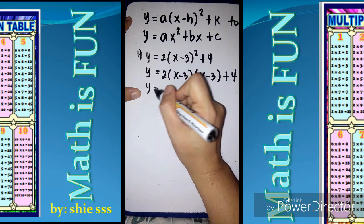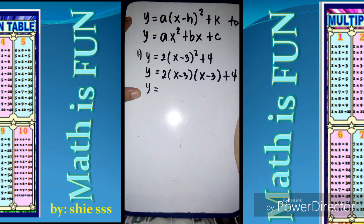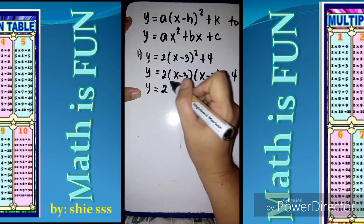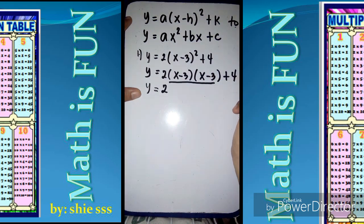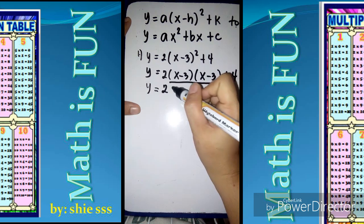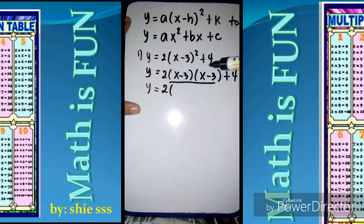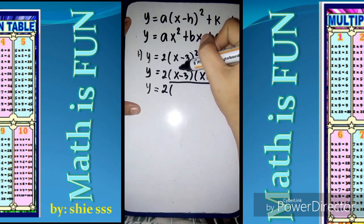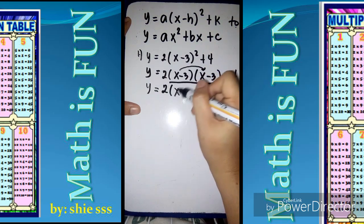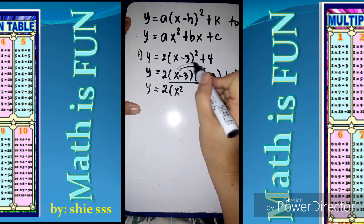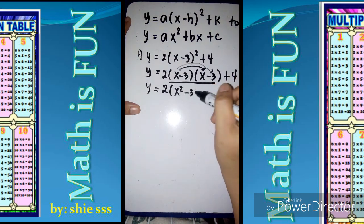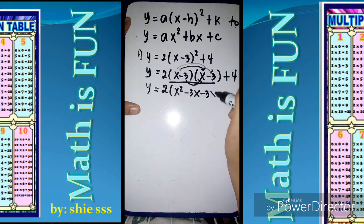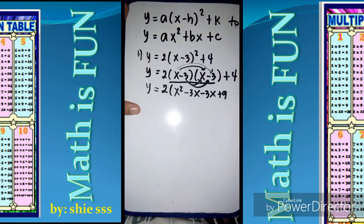The next step is to simplify or to multiply the factors. So let's have x minus 3 times x minus 3. To multiply, I'm going to use the distributive property. So x times x equals x squared, x times negative 3 is negative 3x, negative 3 times x equals negative 3x, and negative 3 times negative 3 equals positive 9, plus 4.